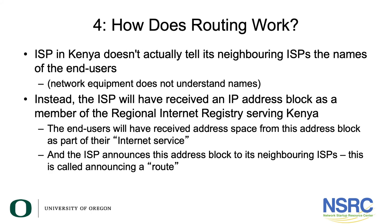The ISP in Kenya doesn't actually tell its neighboring ISPs the names of the end-users, as network equipment does not understand names. Instead, the ISP will have received an IP block as a member of the regional internet registry serving Kenya. The end-users will have received address space from this address block as part of their internet service, and the ISP announces this address block to its neighboring ISPs. This is called announcing a route.